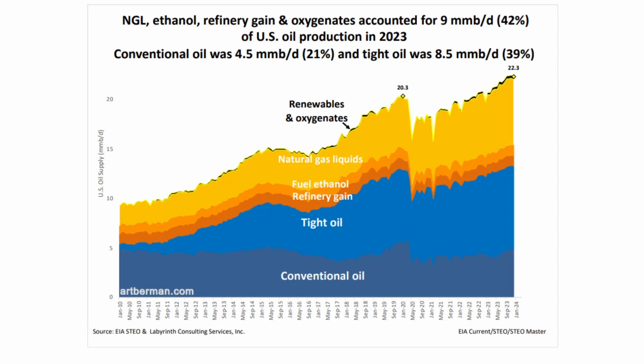Natural gas liquids don't even come from petroleum — they come from natural gas. They come to the surface as a gas, are taken to a plant, and stripped using chemicals to force them into a liquid. Then there's fuel ethanol in the United States, which we add to gasoline, and that comes from plants — mostly corn. So that giant wedge of 42 percent of U.S. liquids production has nothing whatsoever to do with crude oil or condensate.